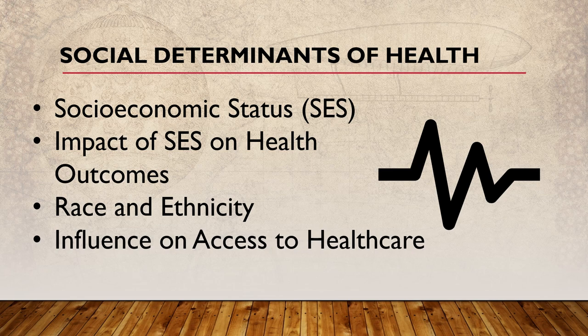We can't overlook the influence of race and ethnicity on health. In countries such as America or South Africa, racial minorities often experience unequal access to healthcare services, leading to poor health outcomes compared to their white counterparts. In the USA, for example, African Americans and Hispanic populations are known to have higher rates of diabetes and hypertension compared to white Americans due to systemic inequalities in healthcare access and quality.